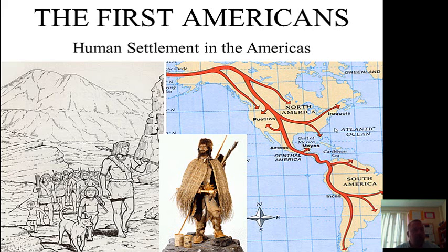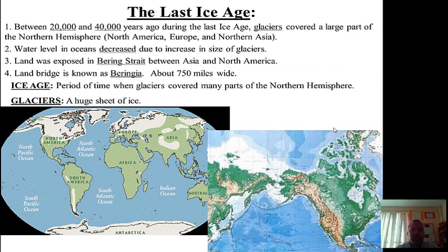Now, turn to page 4 in your student packet. The first thing we are going to look at is the last Ice Age. An Ice Age is a period of time when glaciers covered many parts of the Northern Hemisphere.